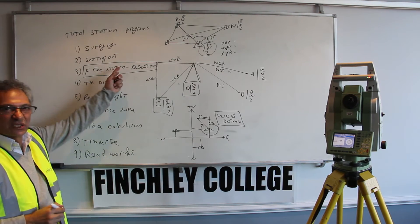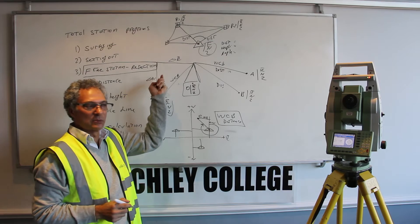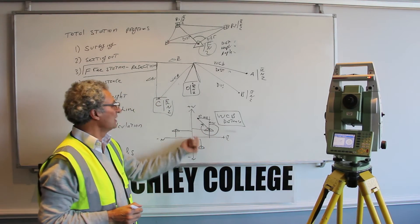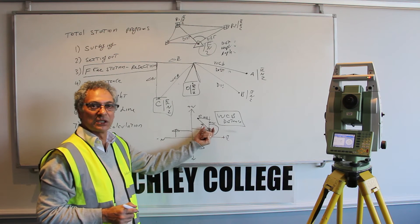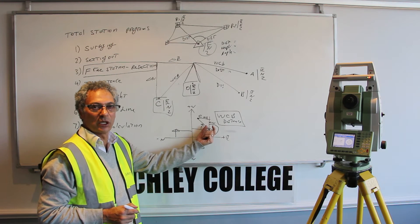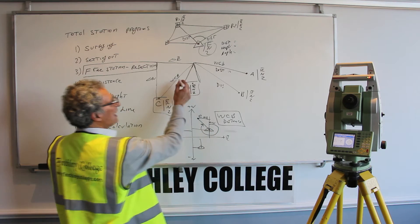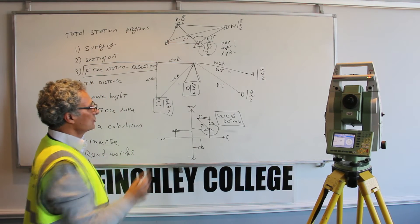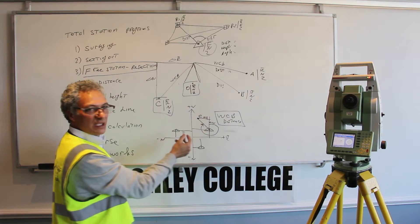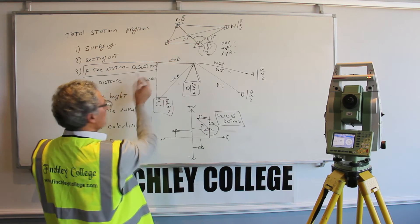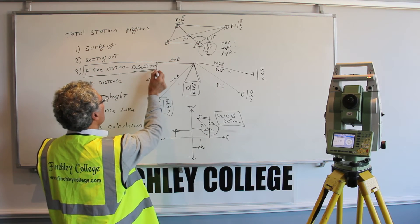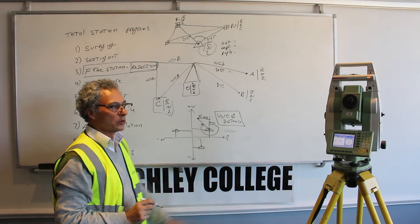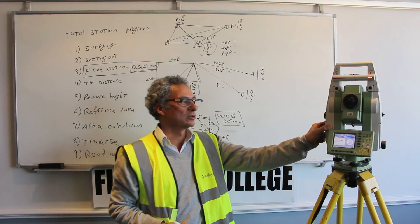The free station program is something you'll be doing all the time — maybe 10 to 20 times in a day. Every time you set up the instrument in a new position, you go to the free station program and calculate your location on the system. Once you've done that, you can do your setting out, surveying, or any other program. In reality, the instrument cannot do anything meaningful until you've performed a free station program — sometimes called resection — and worked out the position of the instrument in relation to your grid system.